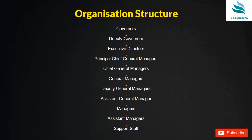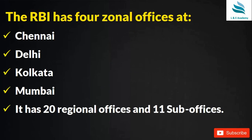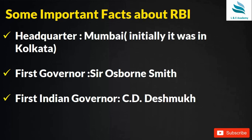The organizational hierarchy runs from the Governor at the top, followed by Deputy Governors, Executive Directors, Principal Chief General Managers, Chief General Managers, General Managers, Deputy General Managers, Assistant General Managers, Managers, Assistant Managers, and support staff. The RBI has four zonal offices at Chennai, Delhi, Kolkata, and Mumbai, along with 20 regional offices and 11 sub-offices.